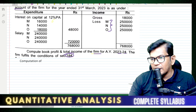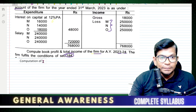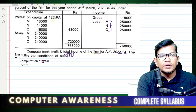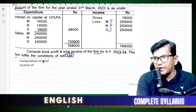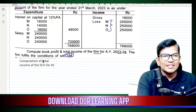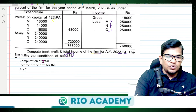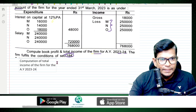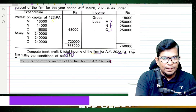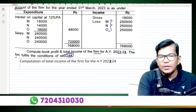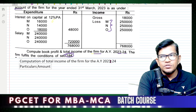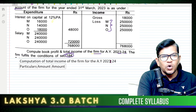Book profit. The total income of the firm for the assessment year 2023-24. Write your particulars and amount — write one more column for working.